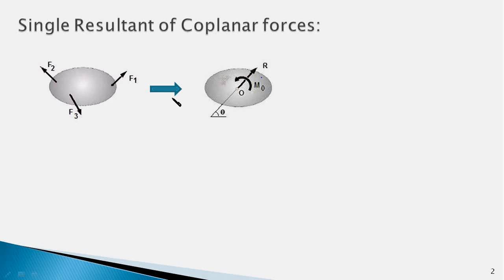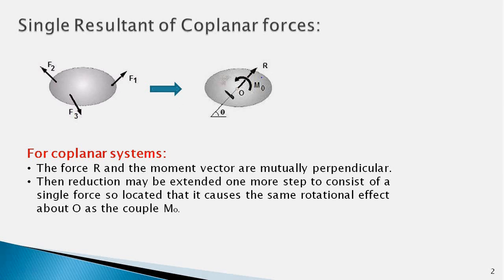So in the case of coplanar forces, the resultant force vector and the couple's moment vector are always mutually perpendicular. In such a situation it is possible to have one more step of reduction to a single resultant force, as shown in this figure.